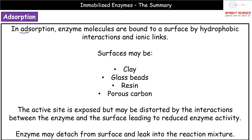In adsorption, we bind enzymes to the surface by either hydrophobic interactions or ionic links. The surfaces we bind to are porous substances — clay, glass beads, resin, or porous carbon, with clay being the most common. The active site is exposed to reactants but can be distorted by these hydrophobic and ionic links, reducing enzyme activity. A second issue is leakage — where the enzyme detaches from the surface and ends up in our reaction mixture.